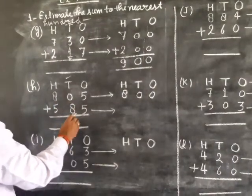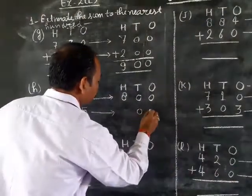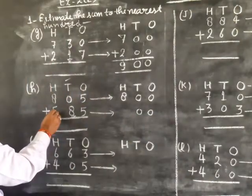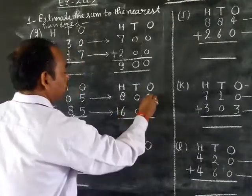We look at tens place digit, which is 8. 8 is greater than 5, so it's replaced by 0 and 1 is added to the hundreds place digit: 5 plus 1 equals 6. This becomes 600.